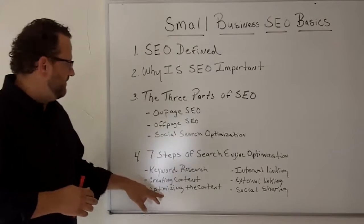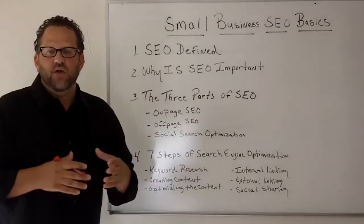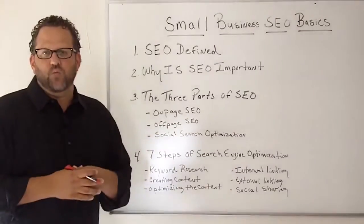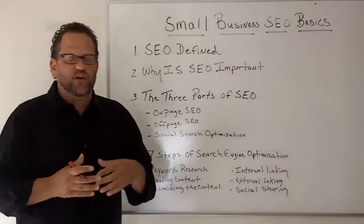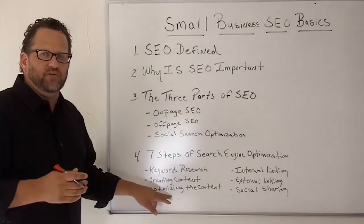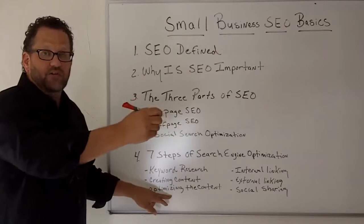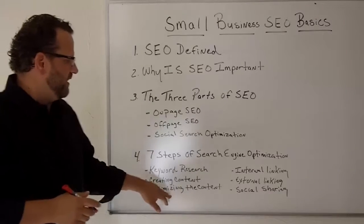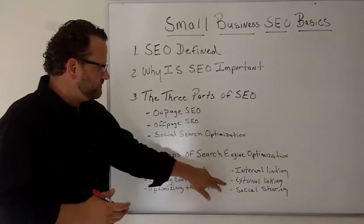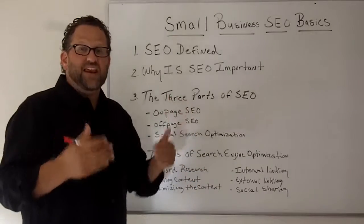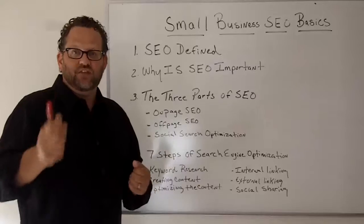Then, of course, it's optimizing the content — on-page SEO — making sure your keywords are in your title tag, in your H1 tag, and in the body copy of your articles, and that you're using proper anchor text links. That's all about optimizing your content. Then there's internal linking, which I just talked about, and external linking — getting extra backlinks to your website. If you have great content, it's much easier to get those links back to your site.